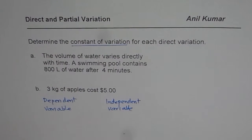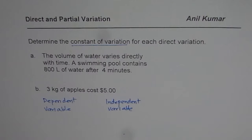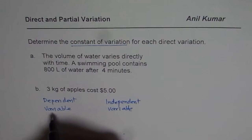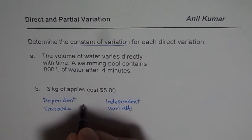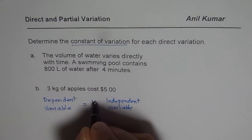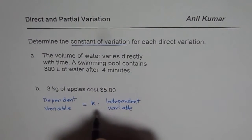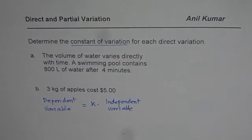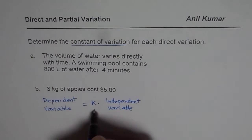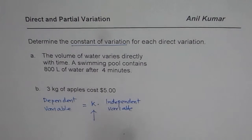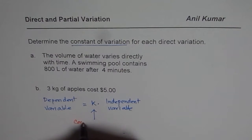We are trying to see a relation between the two. If it is a direct relation, in that case the dependent variable is equal to k times the independent variable. This k is called the constant of variation.